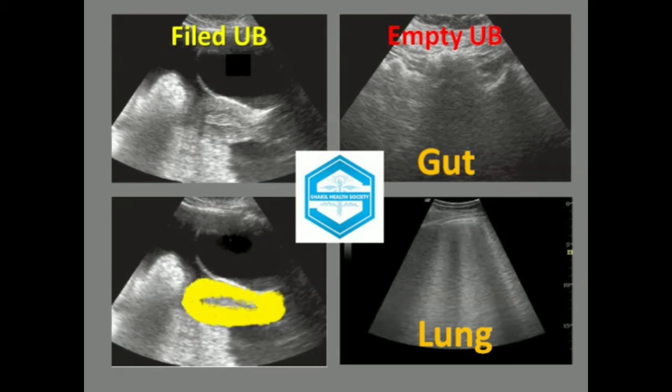An acoustic gel must fill the space between the transducer and the patient. Otherwise, sound will not be transmitted across the air-filled gap between the probe and the body. Bone conducts sound at a much faster speed than soft tissue. Because ultrasound instruments cannot accommodate the differences in speed between soft tissue and bone, current systems do not image bone or structures covered by bone.